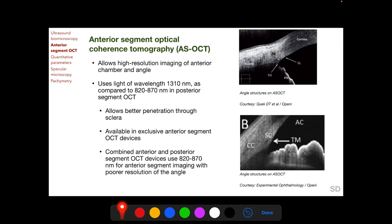Combined anterior and posterior segment OCT devices use 820–870 nanometer light for anterior segment imaging with poorer resolution of the anterior chamber angle. These photographs show AS-OCT images; one photograph demonstrates the poor resolution of the anterior chamber angle in a combined posterior and anterior segment OCT device.